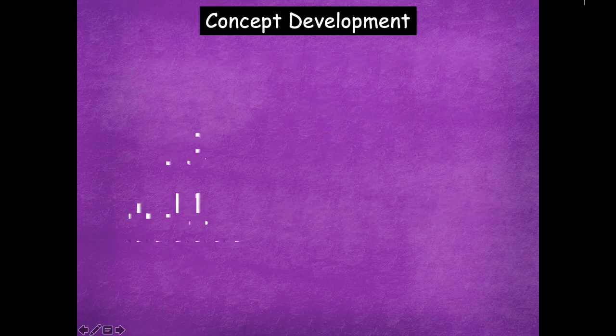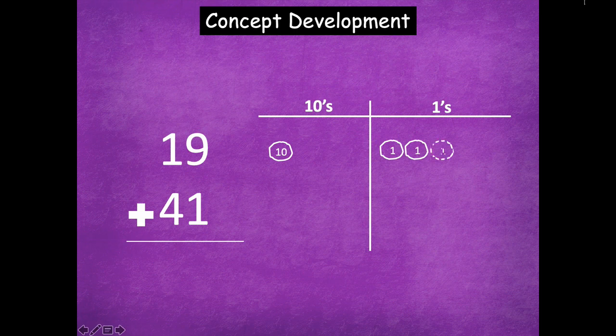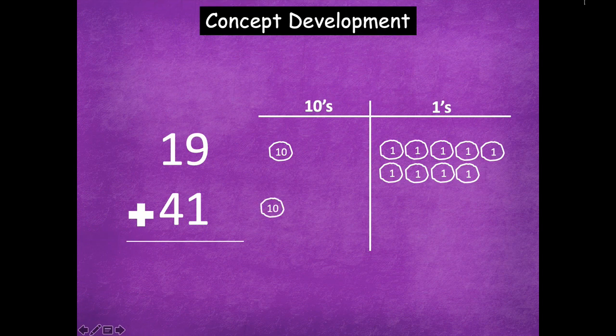All right, let's look at another problem. So we have 19 plus 41. Okay, so we're going to model with our place value chart. So 10, 11, 12, 13, 14, 15, 16, 17, 18, 19. We're going to model 41. So 10, 20, 30, 40, 41.